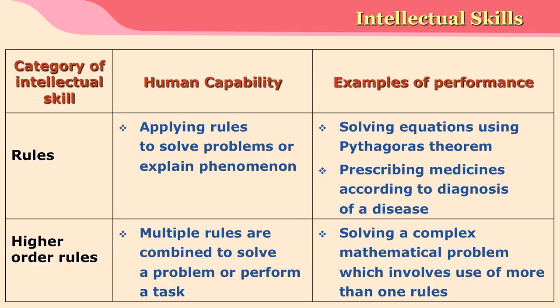The next subcategory is rules: the learner is able to apply rules to solve problems or explain phenomena, such as solving equations using Pythagoras' theorem or prescribing medicines according to a diagnosis. Higher order rules involve combining multiple rules to solve a problem, such as solving a complex mathematical problem requiring more than one rule. When a learner acquires all these subcategories, we can confidently say that intellectual skills have been acquired.